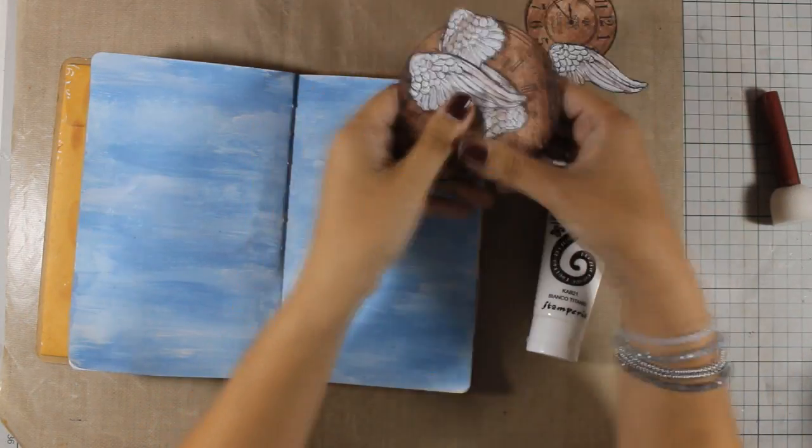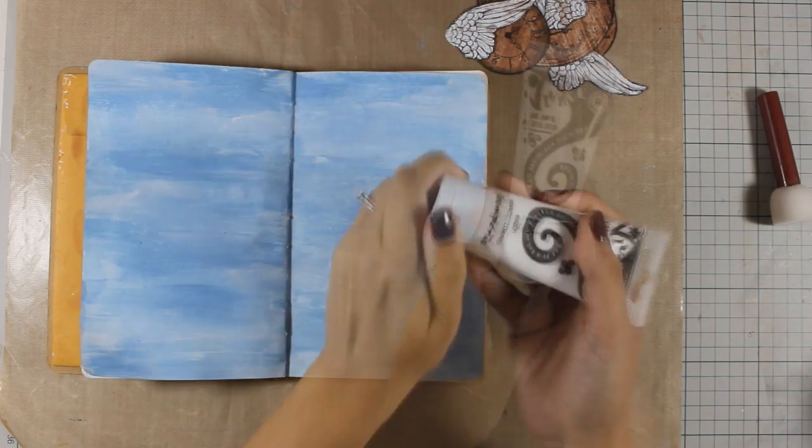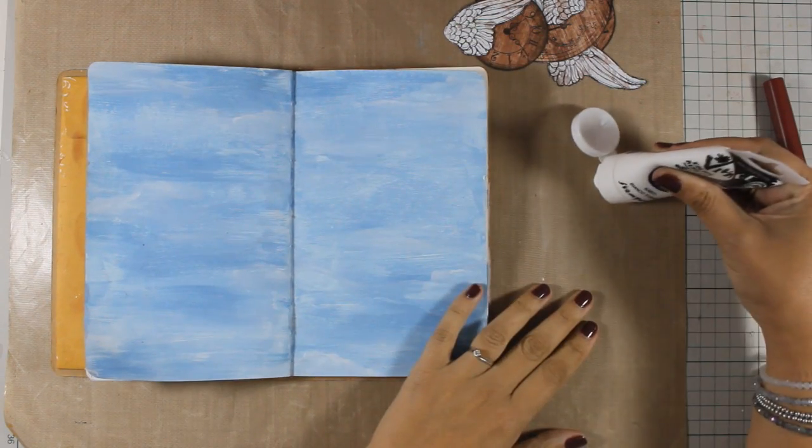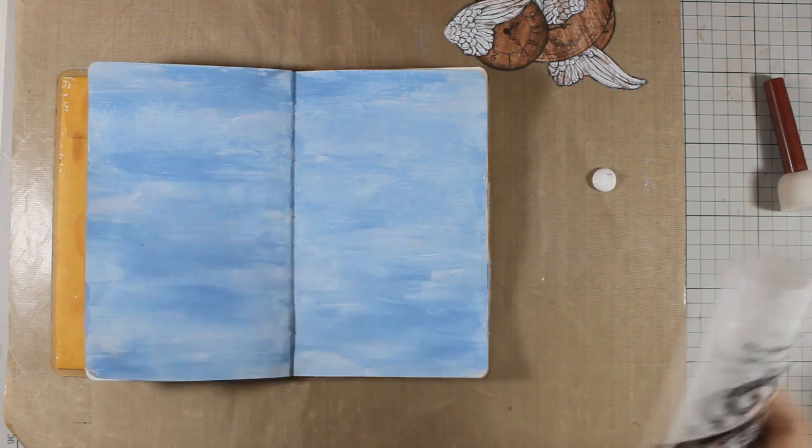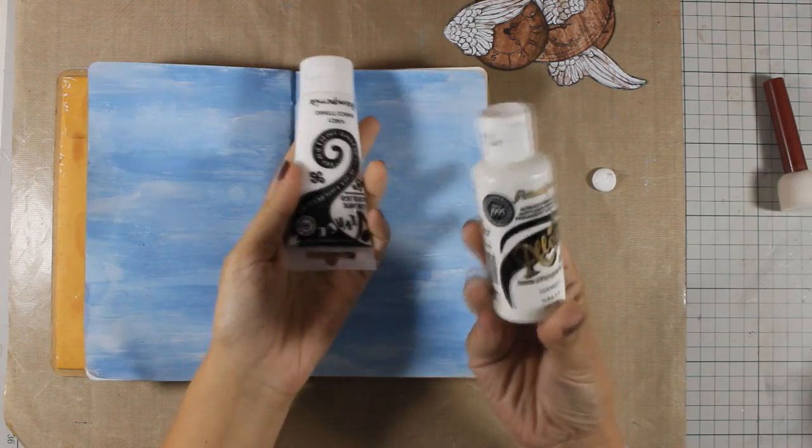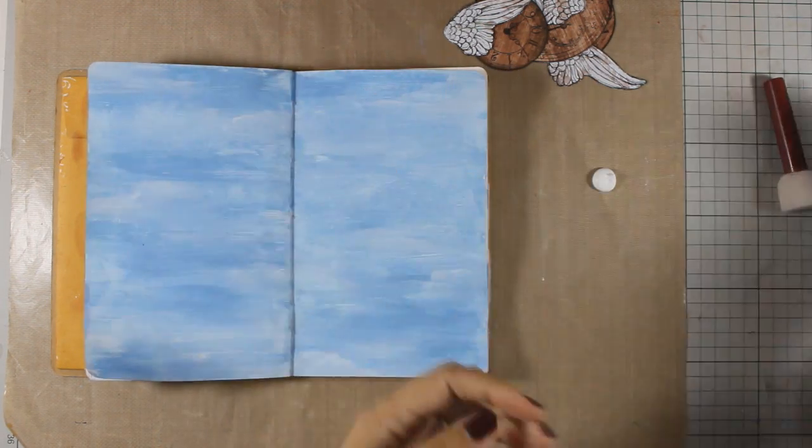Now I have everything cut out, all the wings and the clocks, and it's time to do some stenciling. For stenciling I'm using this white acrylic paint which is from another Stamperia acrylic paints collection and it's not fluid but it's rather thick.